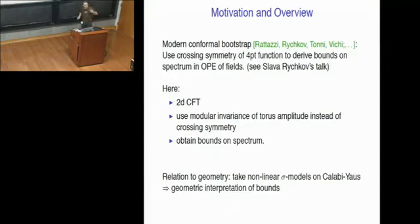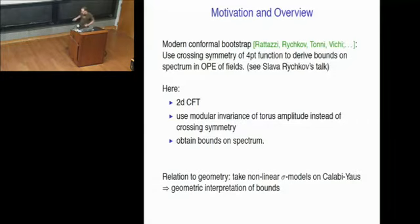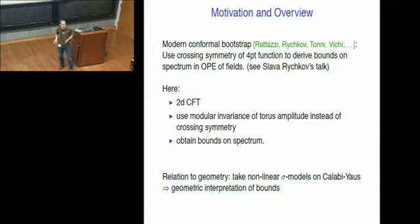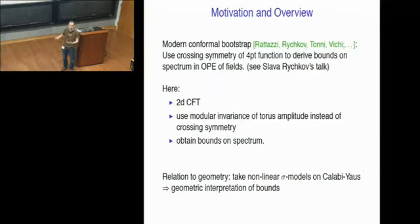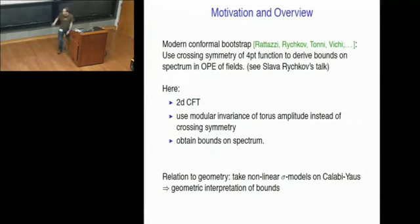This is an intrinsic motivation if you're interested in two-dimensional conformal field theories. But there's also an extrinsic motivation — in particular, there is a relation to geometry, since you can get classes of two-dimensional conformal field theories by considering nonlinear sigma models on Calabi-Yau manifolds. The idea is that in principle it should be possible, if you obtain some results on those CFTs and the spectrum, to translate that into statements on the geometry of Calabi-Yau manifolds.